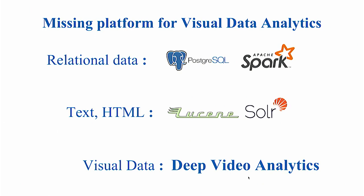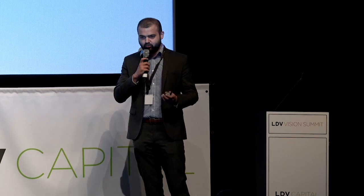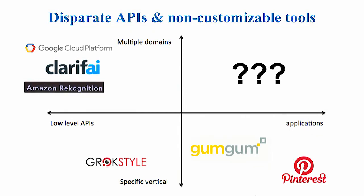When you look at open source platforms today, you have Postgres and Spark for relational data, and Lucene, Solr, Elasticsearch for full-text and search. But there is no such end-to-end platform for visual data. You have libraries like TensorFlow and Caffe, but no way to maintain state. In the marketplace you have Google Cloud Platform, Amazon Rekognition, Clarifai providing low-level cloud-based APIs, and GrooveStyle and GumGum providing applications for specific verticals, and Pinterest providing visual search for end-users.